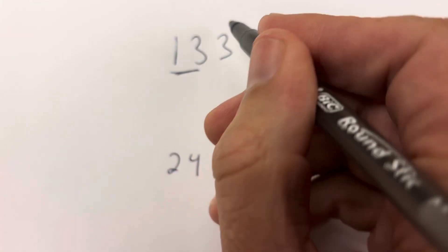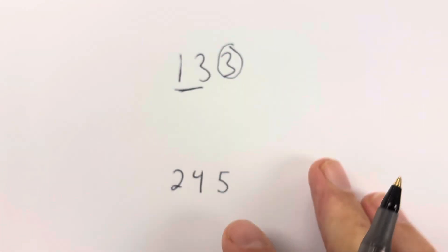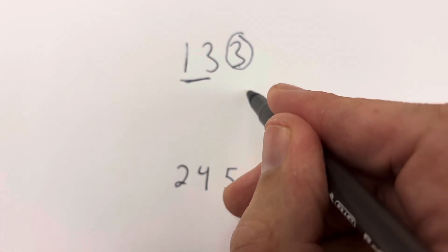You underline all the digits but the last digit. You circle the last digit. Watch how easy this is. You double the last digit, so 3 times 2 is 6.